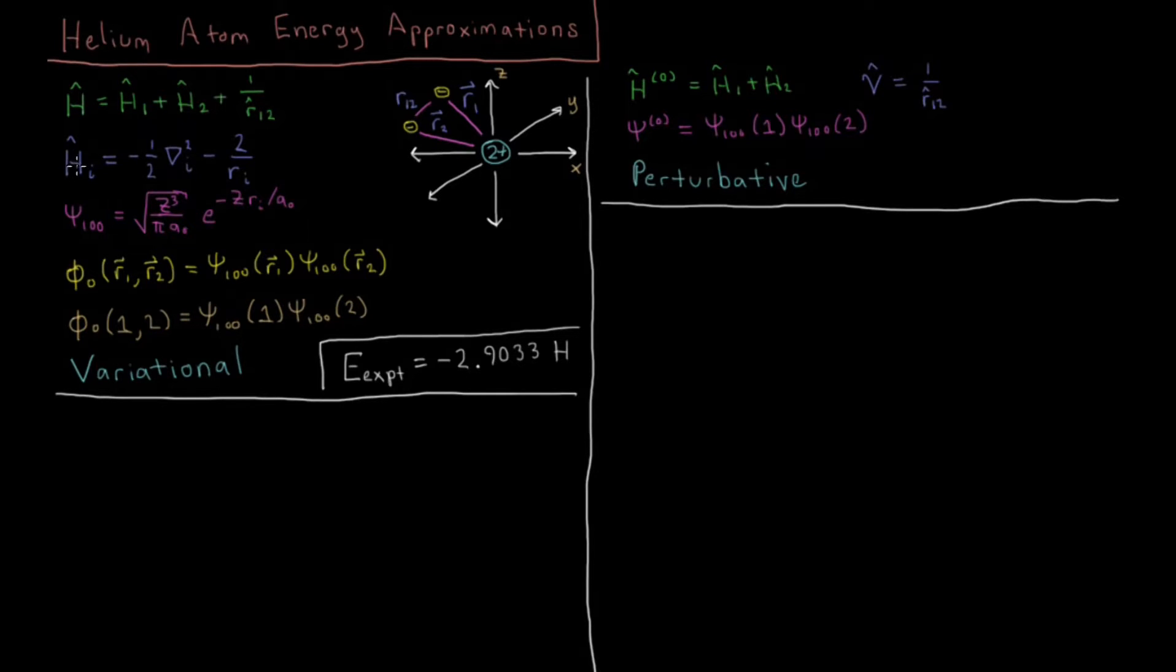So our Hamiltonian is going to be described as a sum of different parts. We have a Hamiltonian for electron 1, which is its kinetic energy and its attraction to the nucleus. These are in atomic units here, the previous video discusses atomic units. And we have this 2 here from the charge of that nucleus, minus because it's attractive, this is just a standard kinetic energy term.